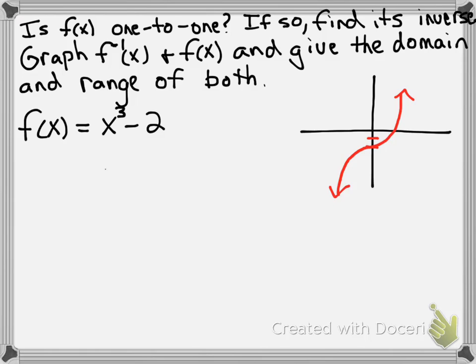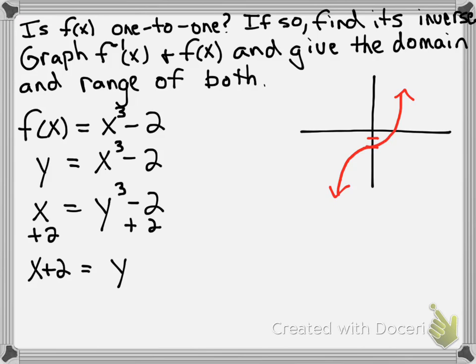To find its inverse, we exchange the f of x for a y. We switch the x and the y, so that's going to be x equals y cubed minus 2. I'm going to solve for y, so I'm going to add 2 to both sides. It's going to give me x plus 2 equals y cubed.